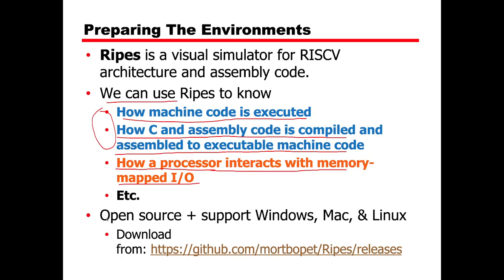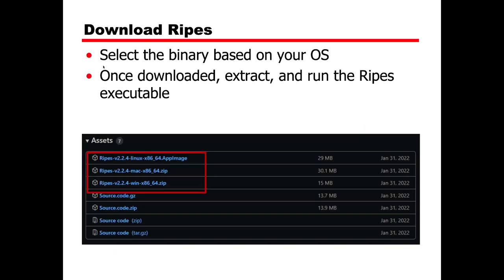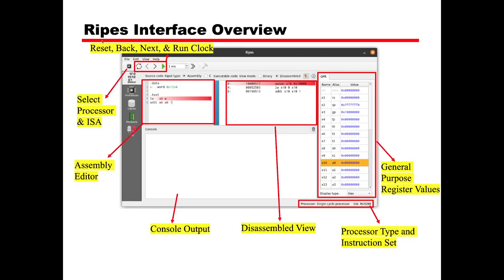First we will set up the environment. RIPES is open source and supports Windows, Mac, and Linux. You can download it from this GitHub address and select the binary based on your OS. For Linux there is an AppImage, for Mac there is a zip, and another zip for Windows. Once downloaded, extract and run the RIPES executable.